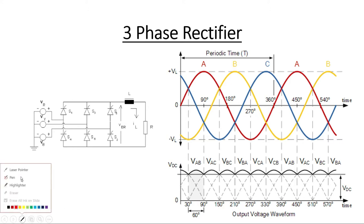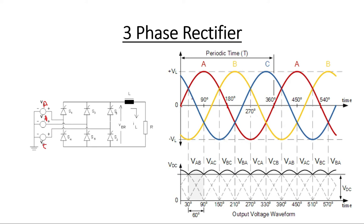I have taken figures and waveforms from different sources. We have Va, Vb, and Vc — A phase in red, B phase in yellow, and C phase in blue. A phase starts from 0 to 180 degrees, B phase is displaced by 120 degrees, and C phase is displaced by 240 degrees, as we know in a three-phase system. One time period is 360 degrees, and we have plus VL and minus VL.